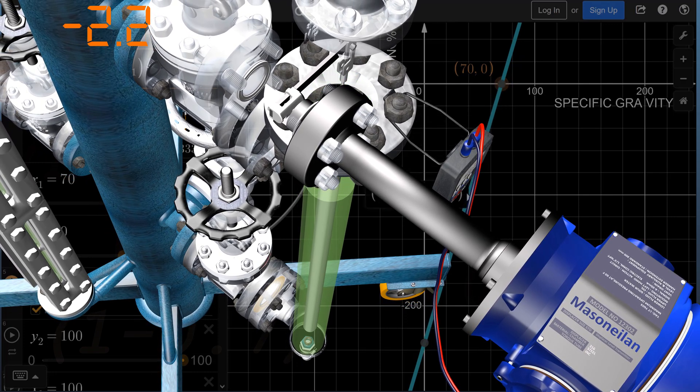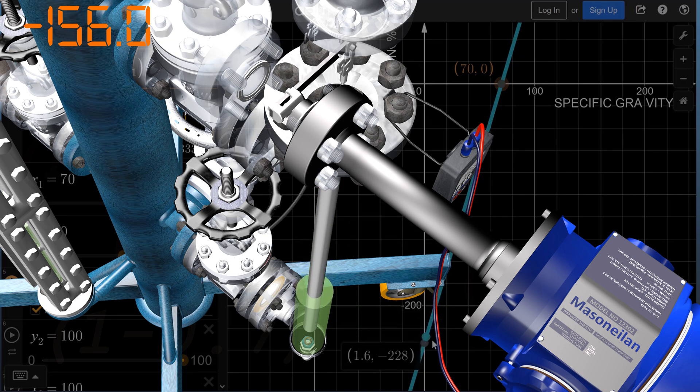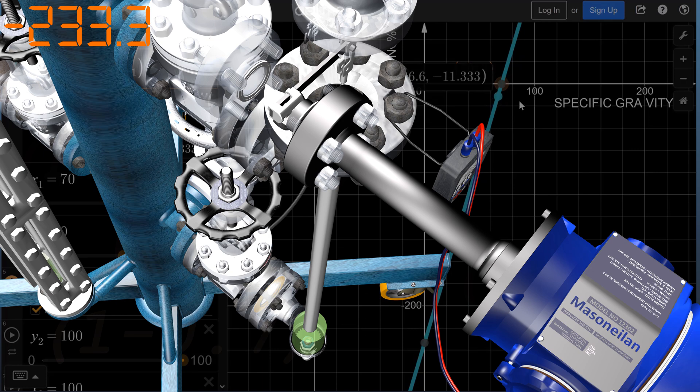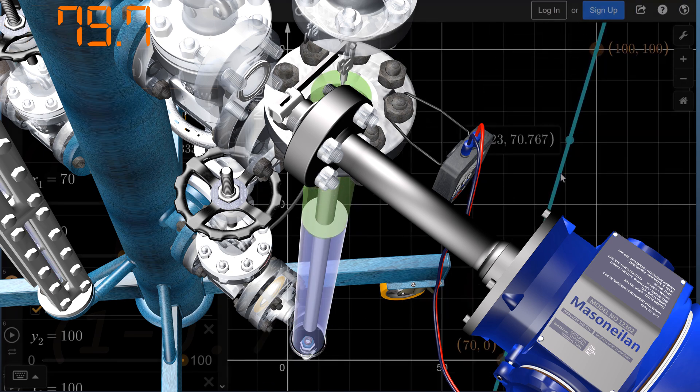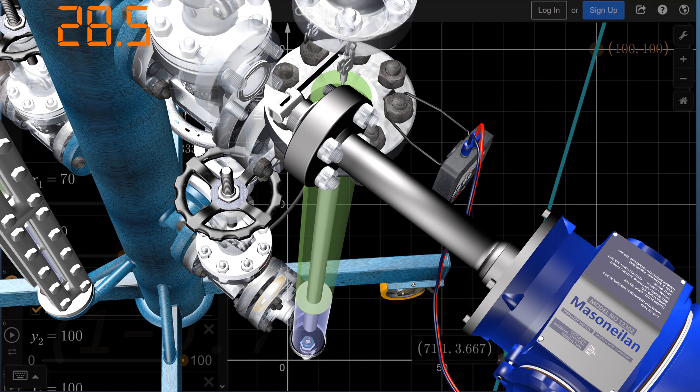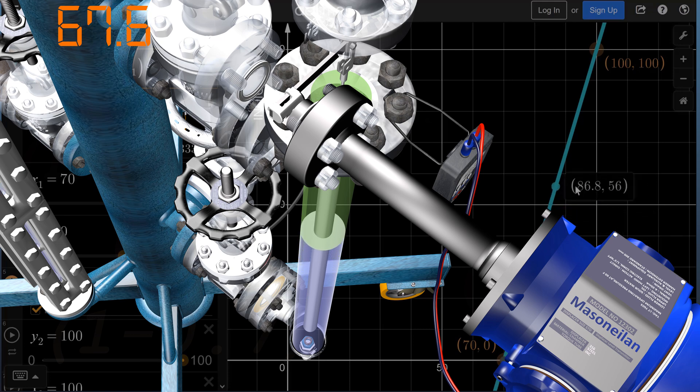When it is completely empty, the displacer goes down and the instrument indicates a negative value. To indicate 100%, it must be full of water. As the interface goes down, water replaces the naphtha, and this is the operation of the instrument in normal conditions.